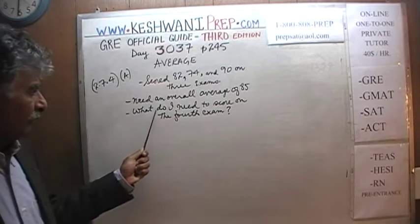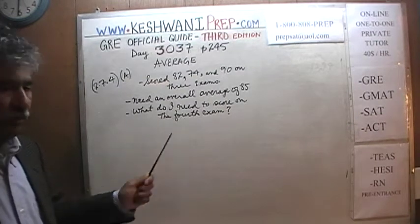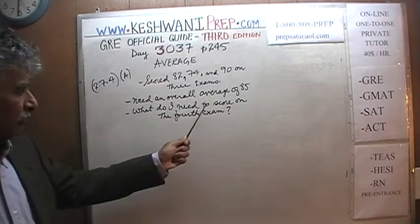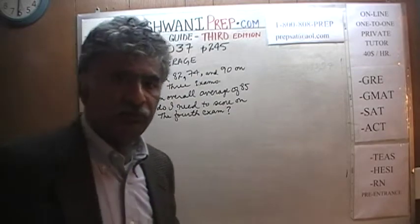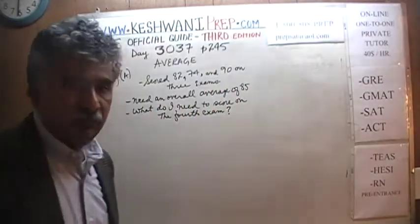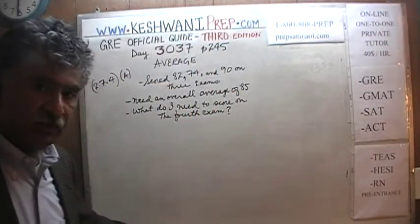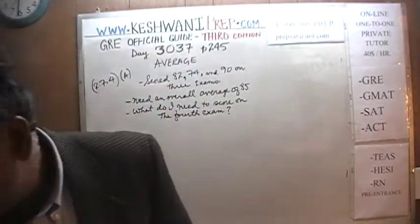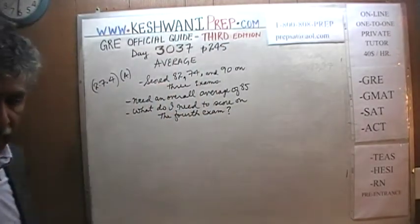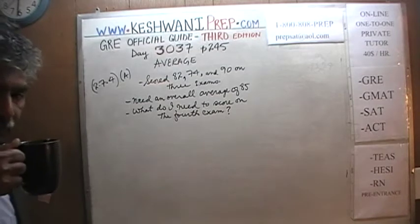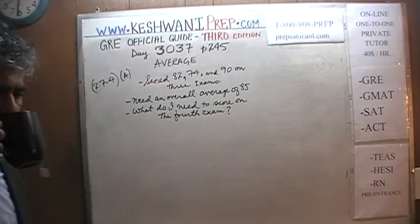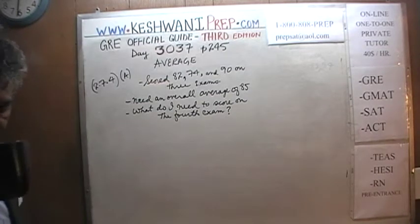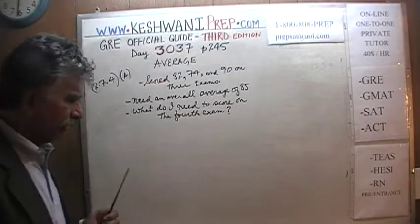The question simply is: what do I need to score on the fourth exam to ensure that I get the overall average of 85? You can pause the video if you like and solve this problem classically. Here is a very simple, quicker way.